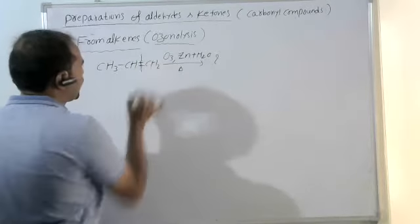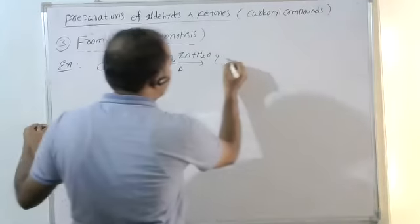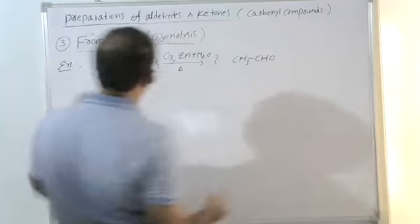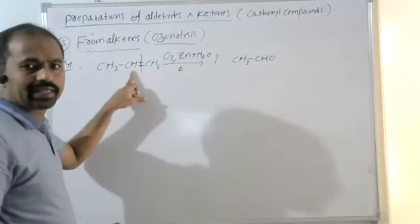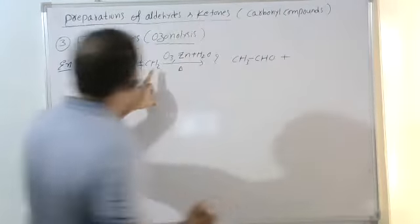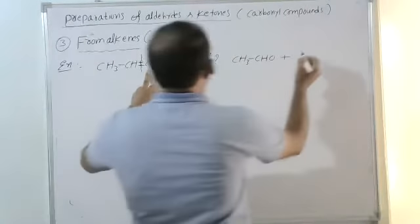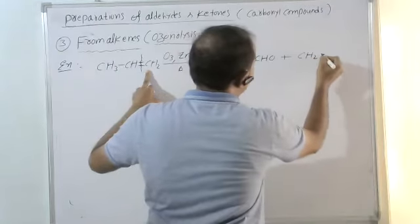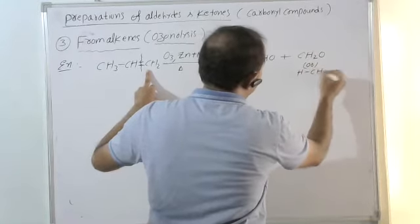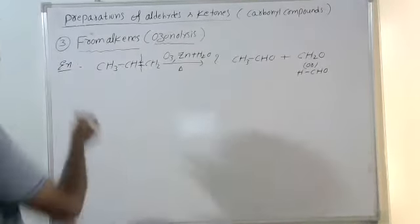This double bond is breaking here. The left part combines with oxygen — we get the aldehyde, ethanal. The remaining part also combines with oxygen; we get CH2O, which is nothing but formaldehyde, methanal. These are the direct ozonolysis products.